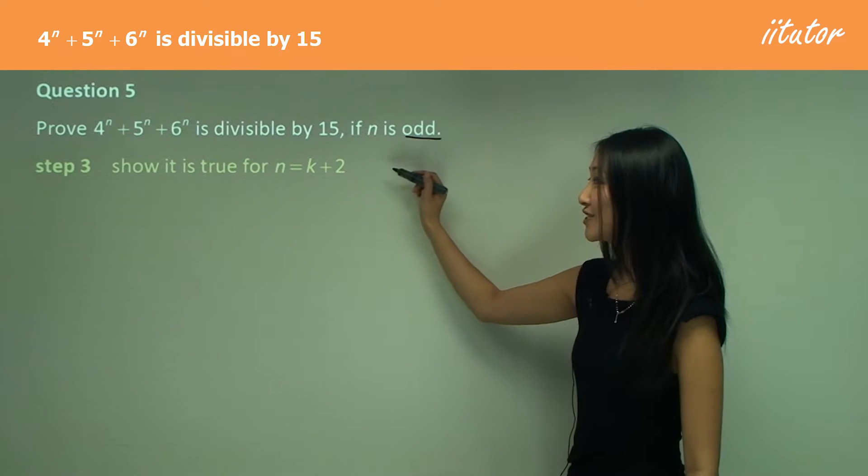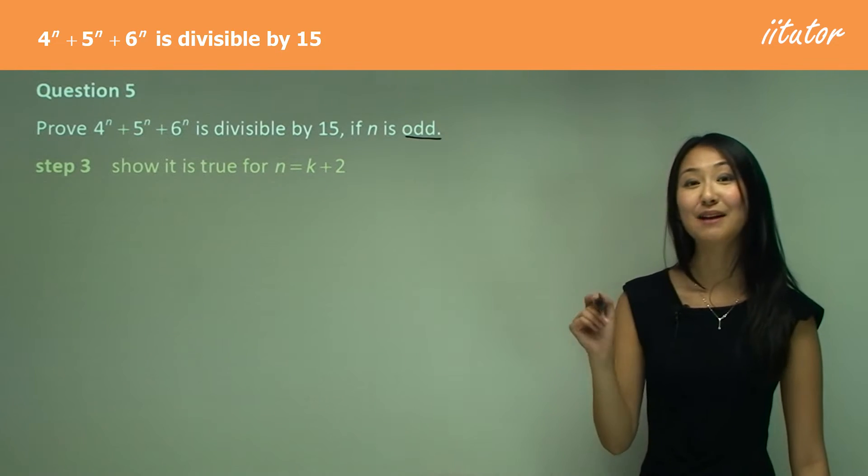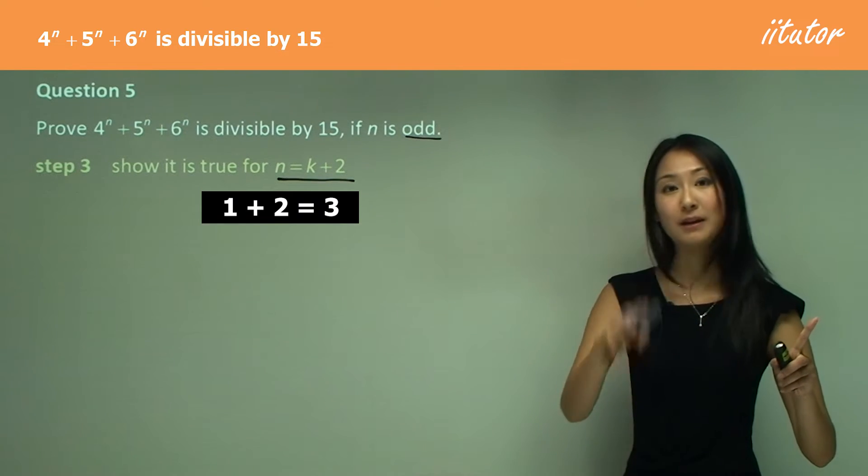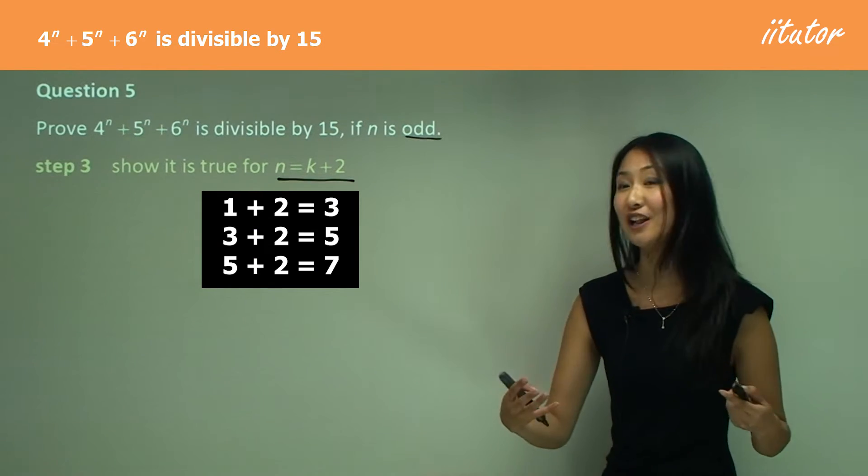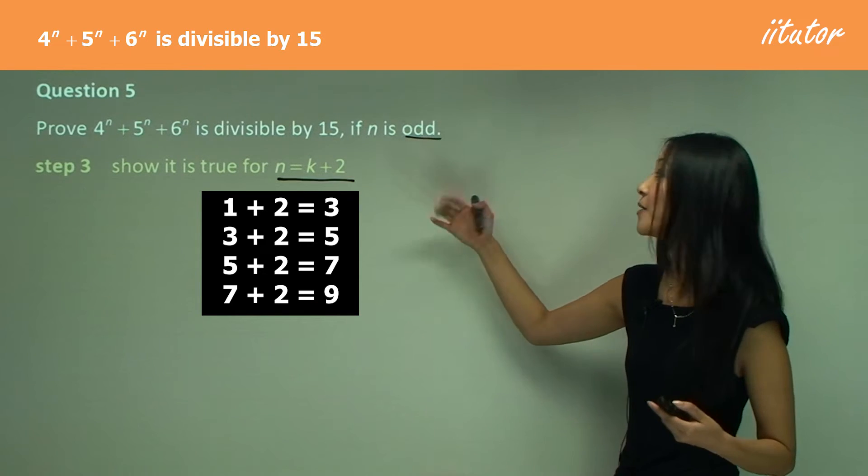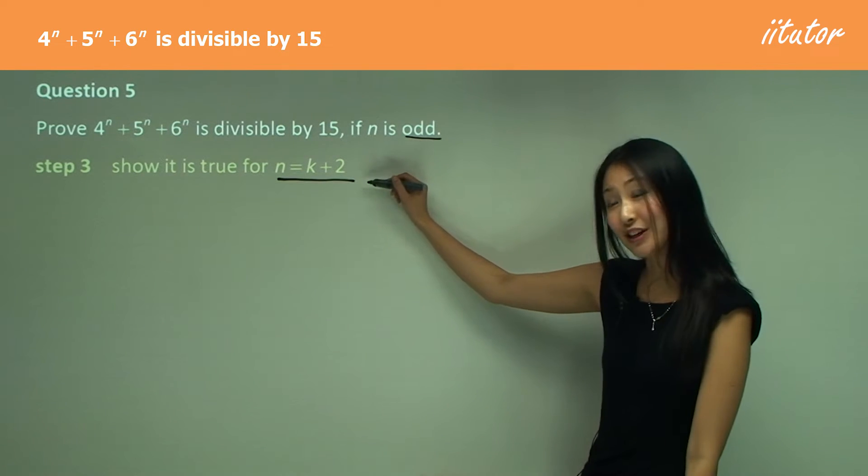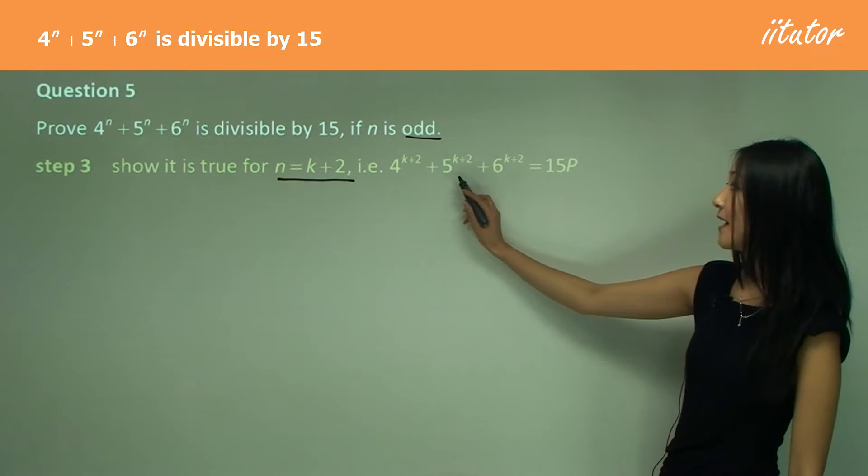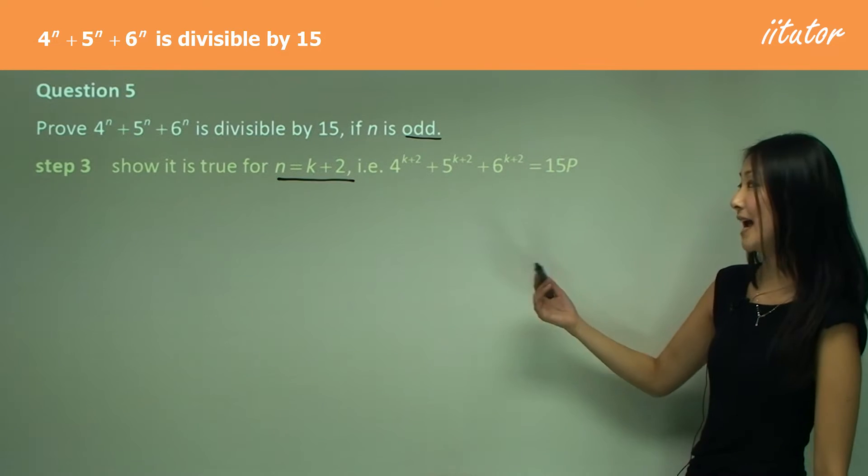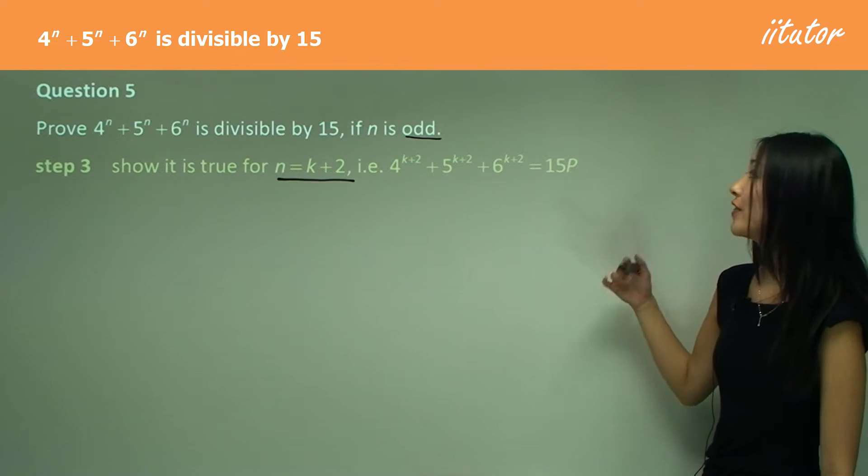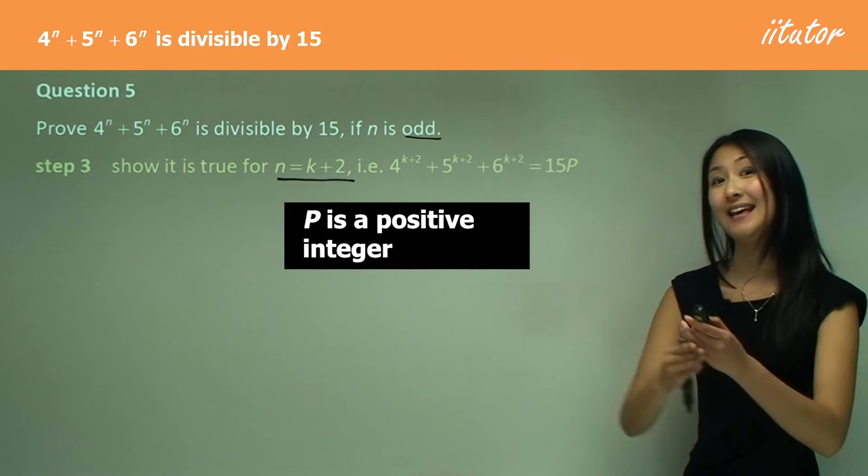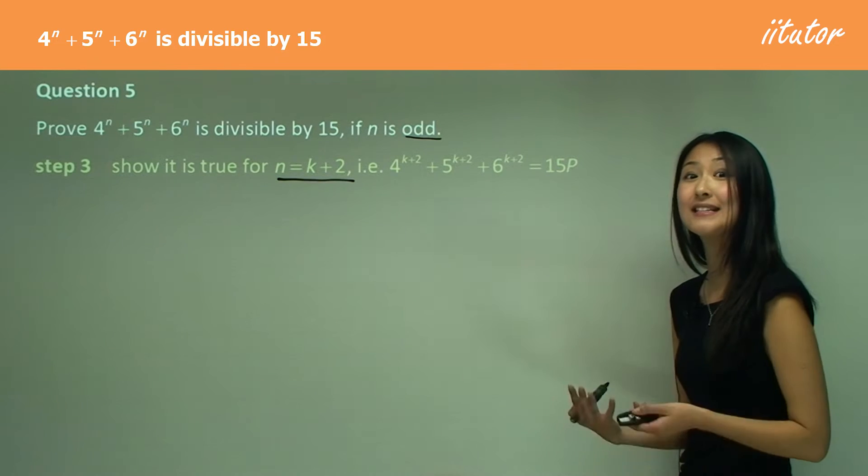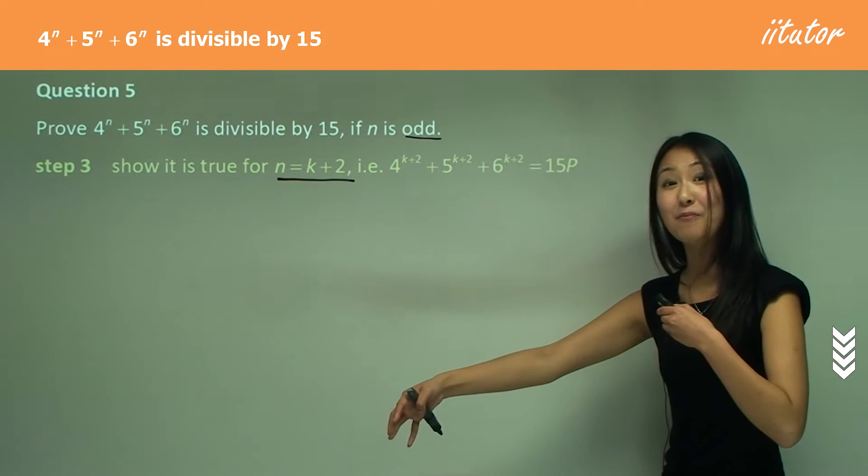Step three, let's show this is true for n equals k plus 2. Make sure that this is odd. I have to start off with 1 plus 2 to be 3 plus 2 to be 5. That's the only way I can ensure it's odd. By substituting in k plus 2, I have 4 to the power of k plus 2, 5 to the power of k plus 2, 6 to the power of k plus 2. I want to show that it's divisible by 15, which means that at the end, I want to be able to factorize out 15. That's the way we show it's divisible.